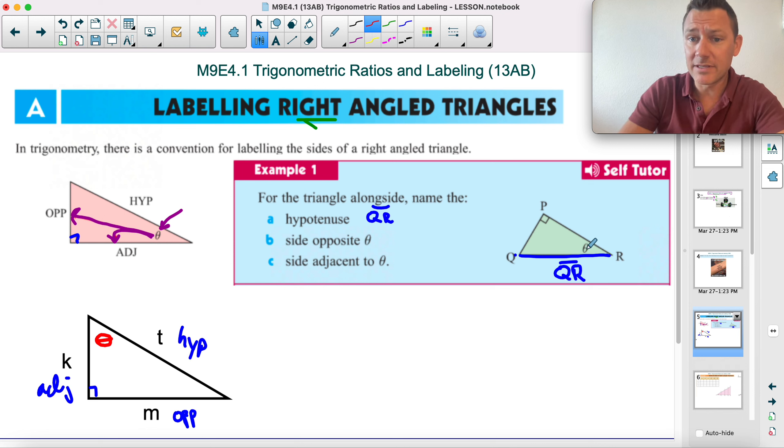Okay, opposite to this angle is this side, which we'll call QP or PQ, doesn't matter. And adjacent is the one next to it. I know the hypotenuse is next to it also, but it's the hypotenuse, it's a more important name, so we give it a special name. It's the longest. So this is PR hat.